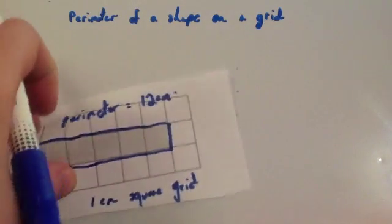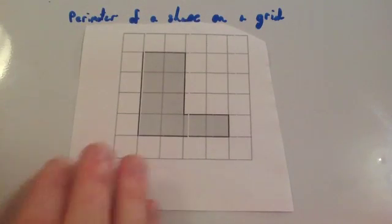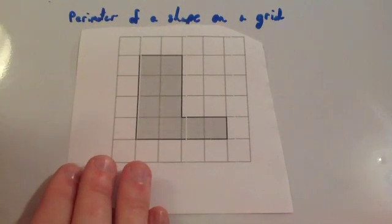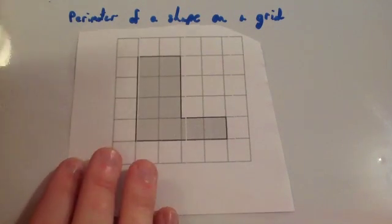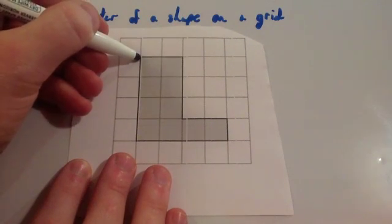Now, if you've got a compound shape, something like this, again the same thing. So remember you're just counting the lines. Some people try to count the squares around the outside, but whenever you're doing it you're counting the lines around the outside.